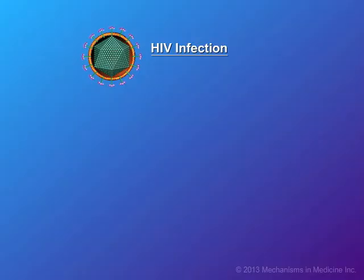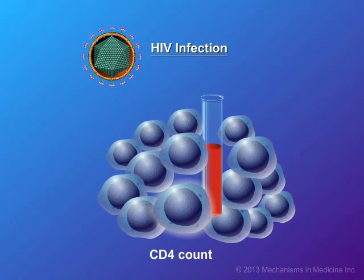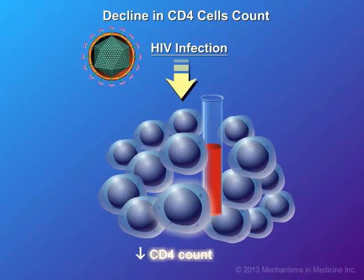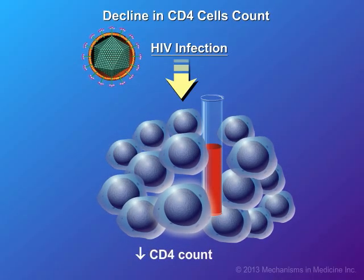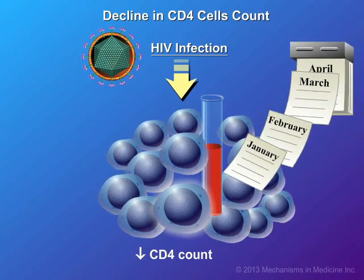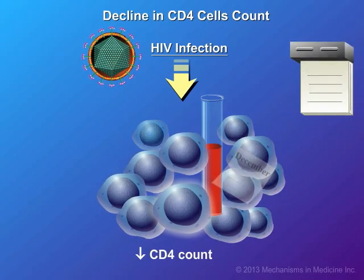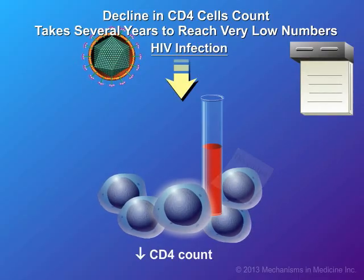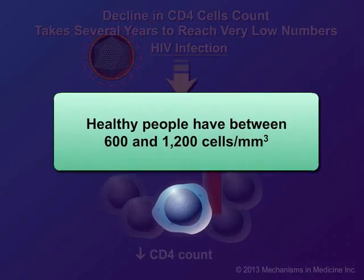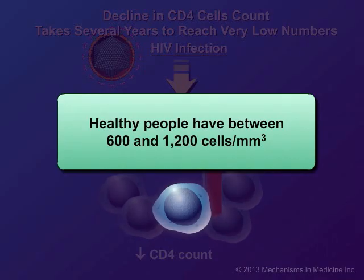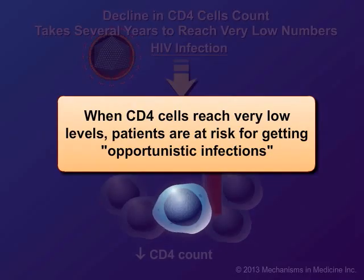The characteristic feature of HIV infection is the decline in CD4 cells. CD4 cell counts are commonly used to monitor the progress of HIV infection. However, declines in CD4 cells can take several years to reach very low numbers. Healthy people have between 600 and 1200 CD4 cells in a cubic millimeter of blood. When CD4 cells reach low levels, patients are at risk for getting serious infections or cancers.